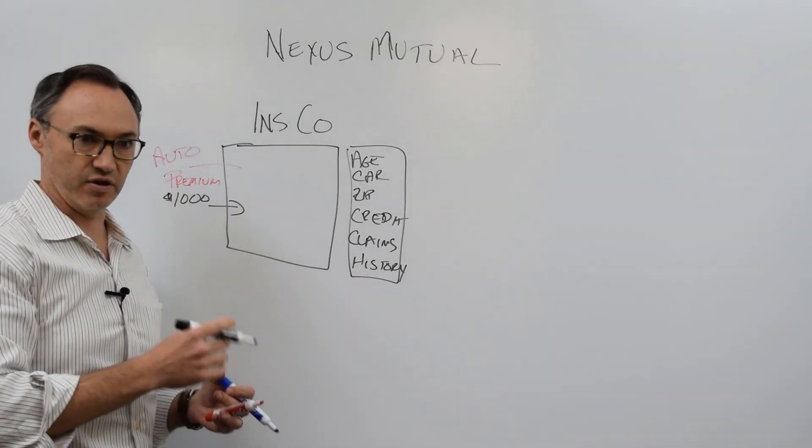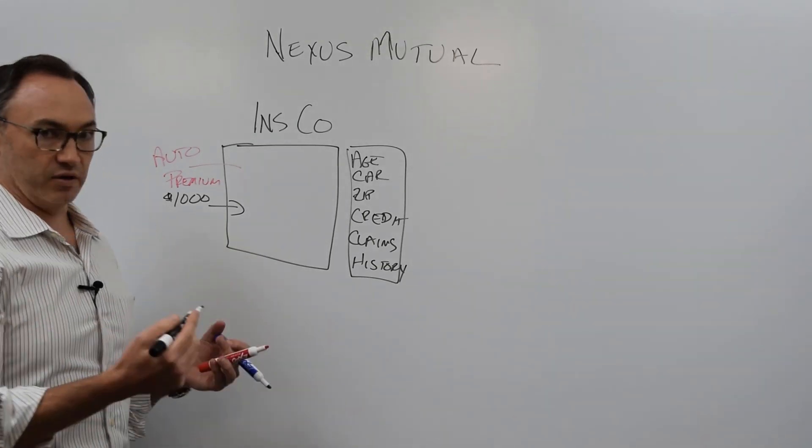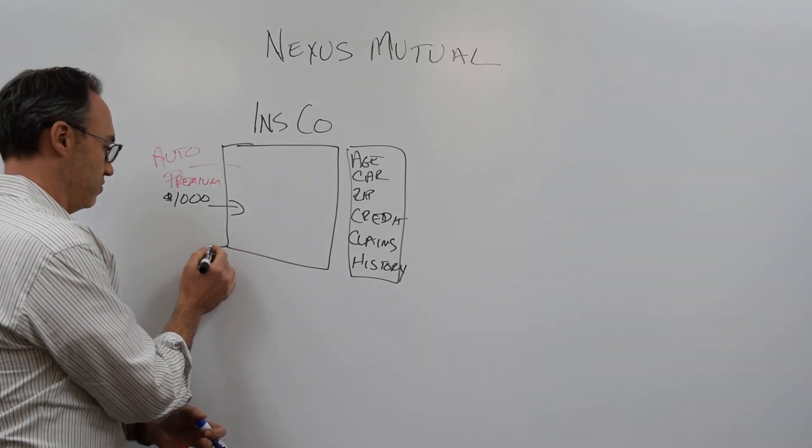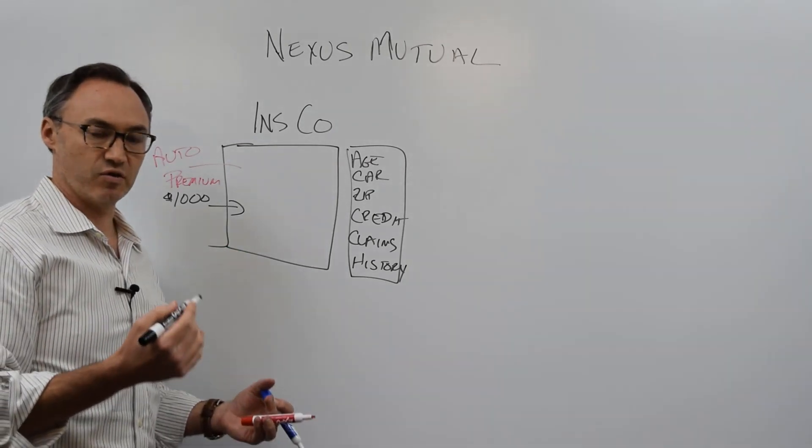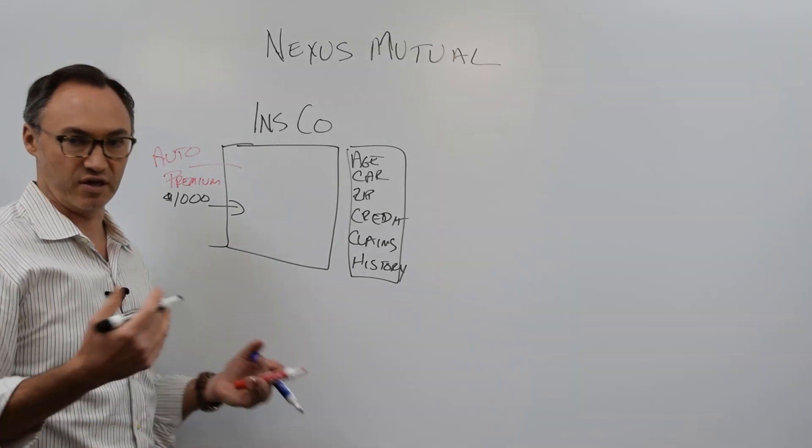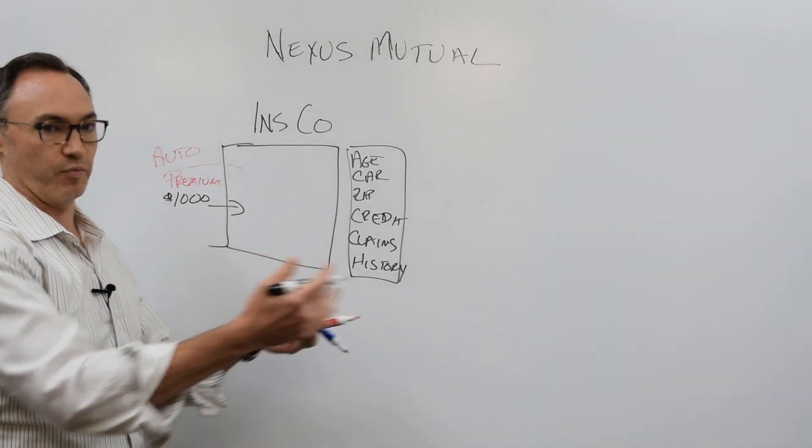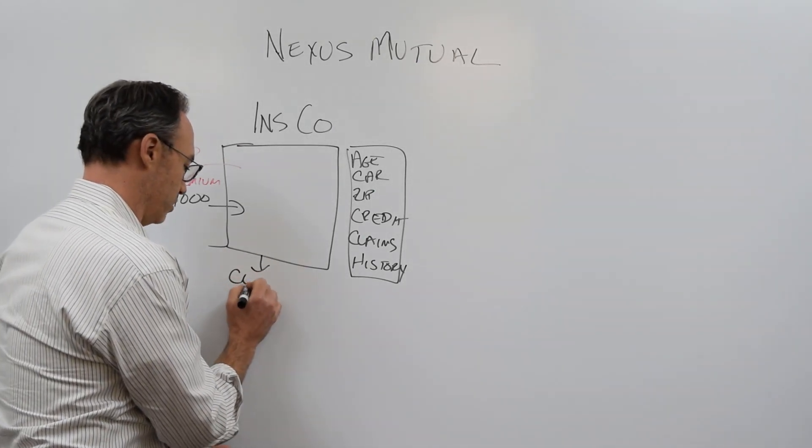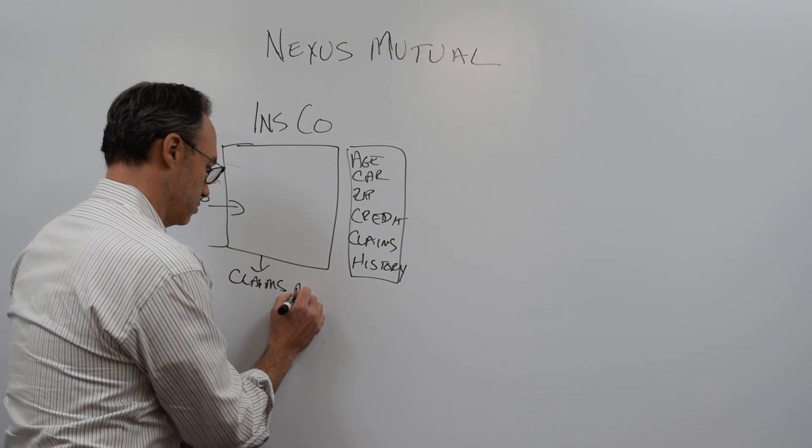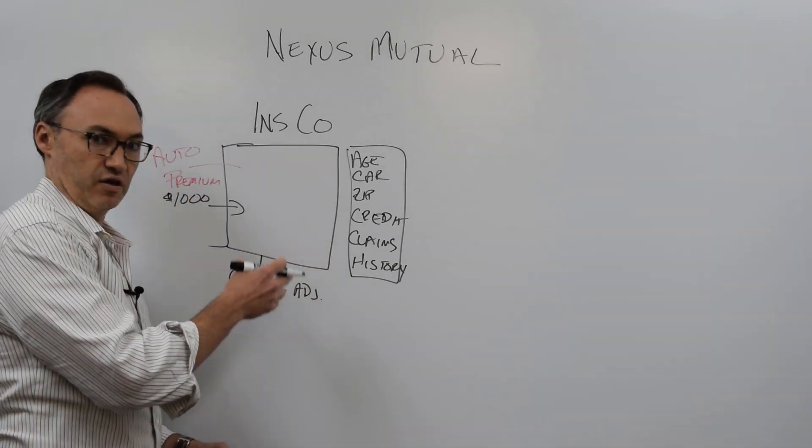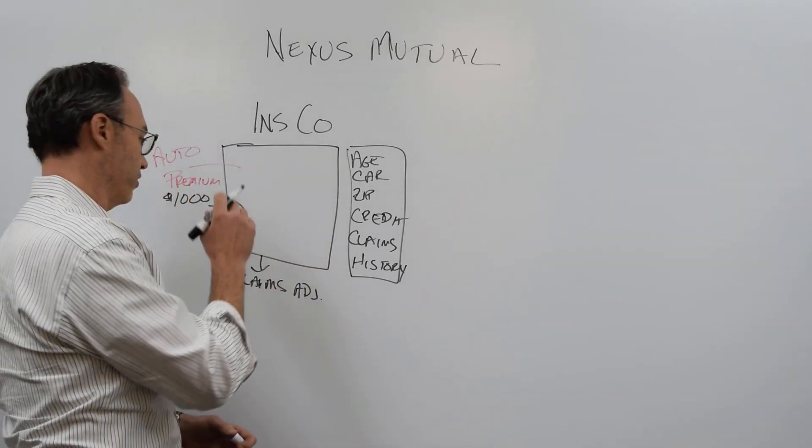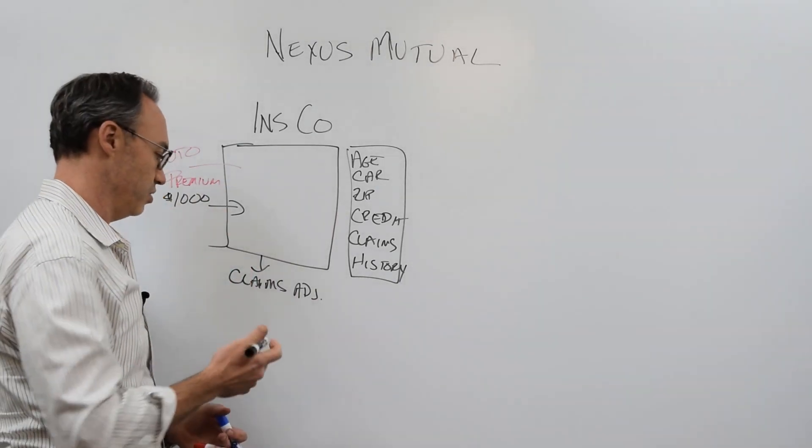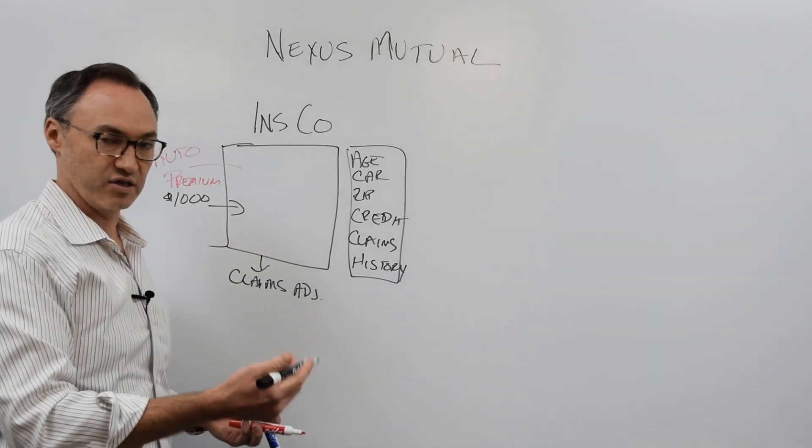So my $1,000 goes in there. Hopefully I don't have any claims for a while, but when the need arises and I have a claim, they then have to assess whether or not the claim is valid. So let's say I got in a car wreck and someone else's car is damaged. They then outsource to a claims adjuster the role of going out and looking at the car, assessing was it my fault. They look at things like police reports if possible. They look at the car of whoever I was in an accident with.